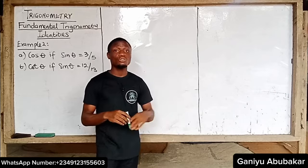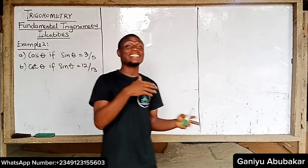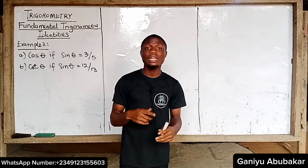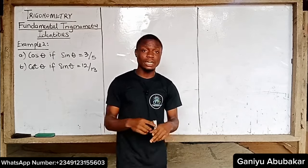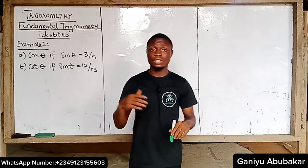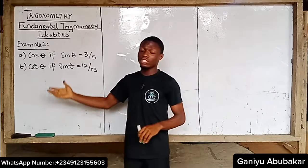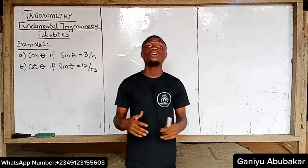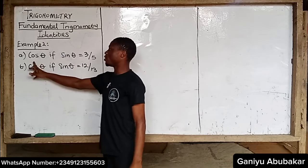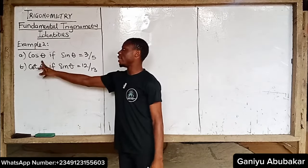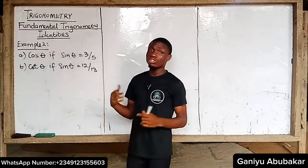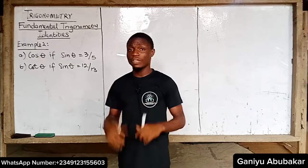Click on that link and it will take you to our very first example. This is example 2. Our very first example was discussed last class — if you are interested in watching that, I'll drop the link above here. So let's look at this second example and see what we get. For question A, find cos theta if sin theta is equal to 3 over 5. So let's solve A together.